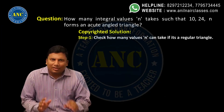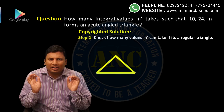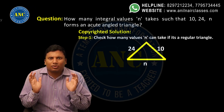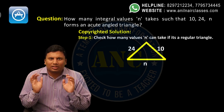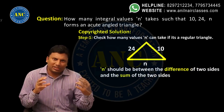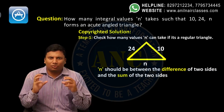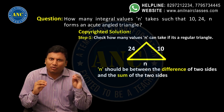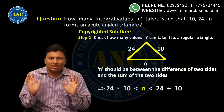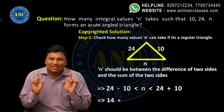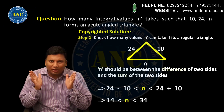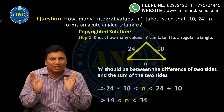Step 1: first it should form a triangle. For 10, 24, n to form a triangle, the third side must lie between the difference and the sum of the other two sides. So: 24 minus 10 < n < 24 plus 10, which means 14 < n < 34. This is the domain of the variable n for it to form a triangle.